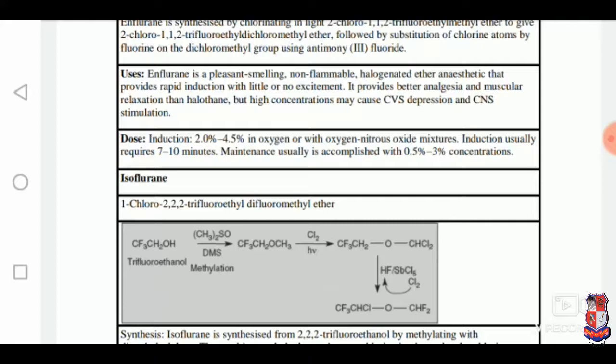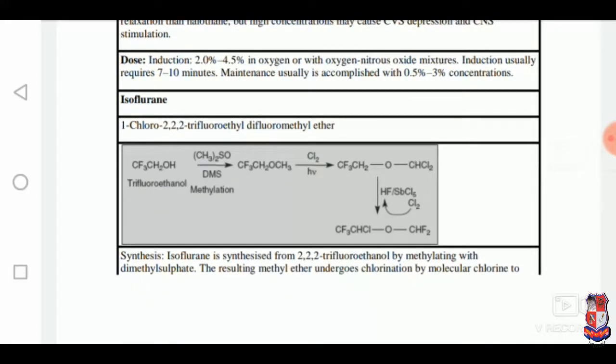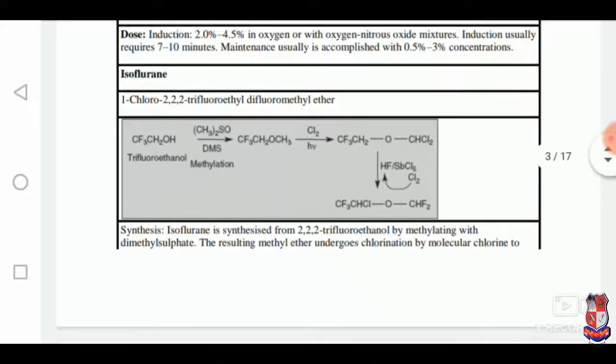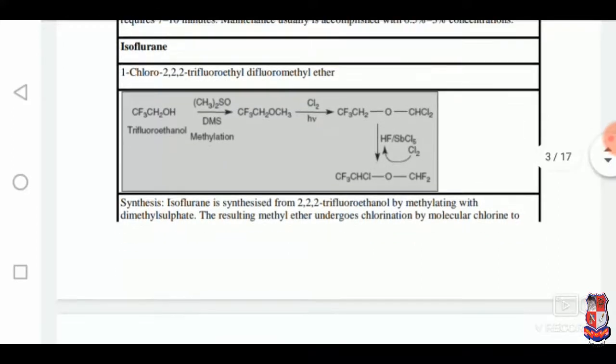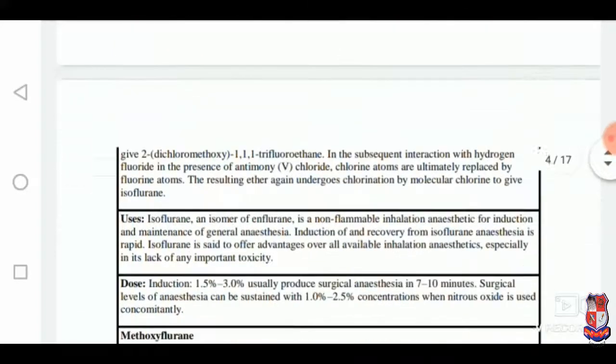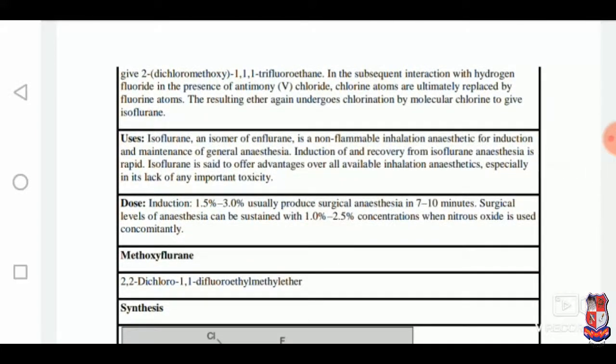Isoflurane: synthesis starts from 2,2,2-trifluoroethanone. It is a non-inflammable anaesthetic for the induction and maintenance of general anaesthesia. Anaesthesia is rapid in the case of isoflurane and it is said to be offering advantages over other anaesthetics, especially its lack of any important toxicity.